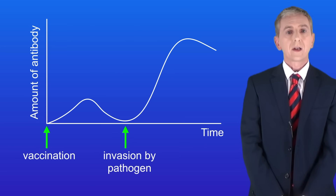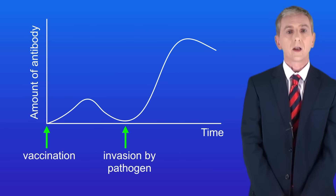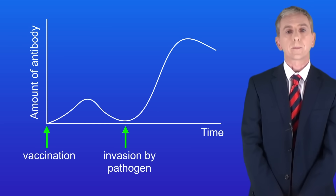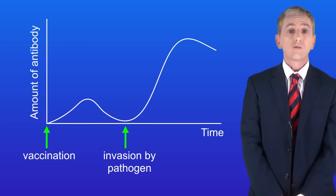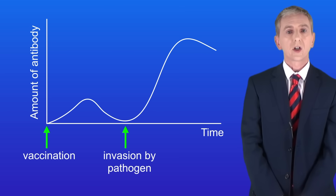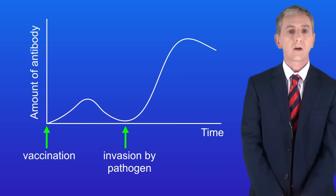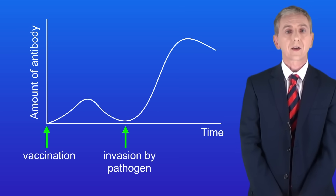This graph shows you the level of the antibody after vaccination and after the body is invaded by the real pathogen. As you can see, when the real pathogen invades the antibody number rises very quickly and to a very high level, and that's due to the vaccination.